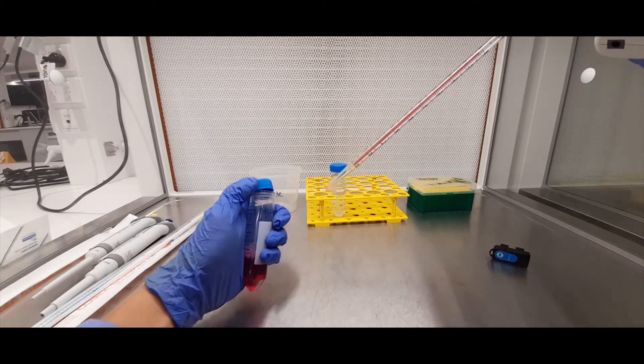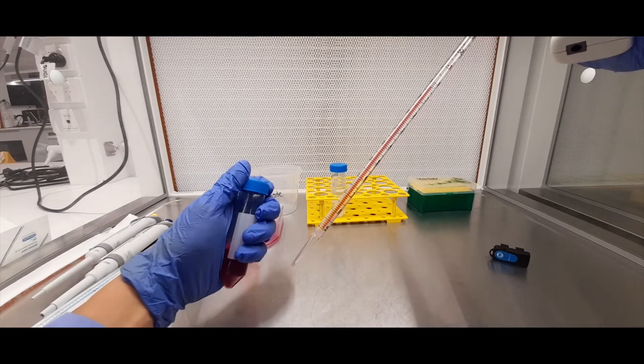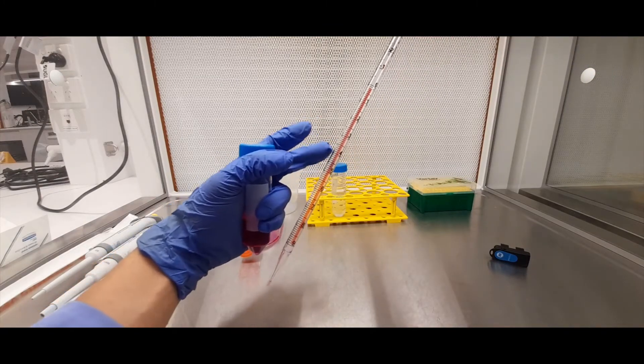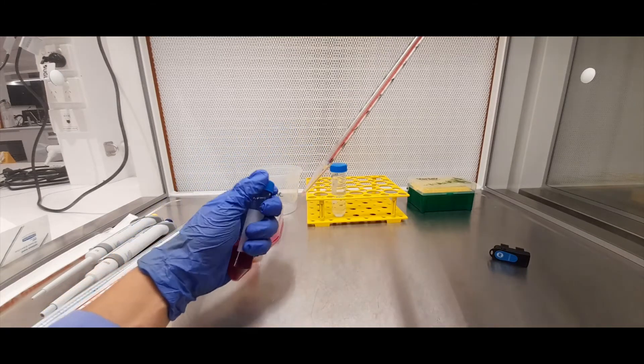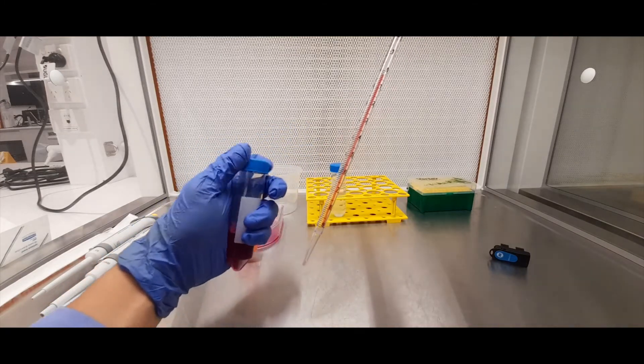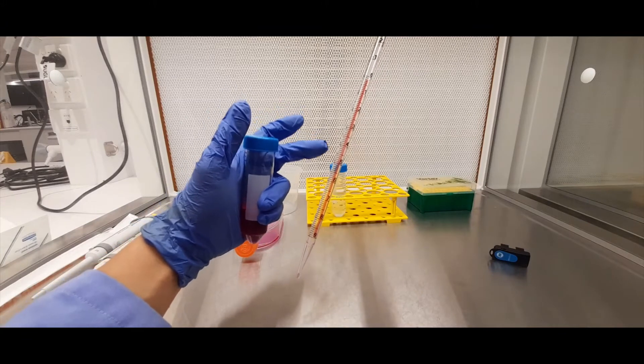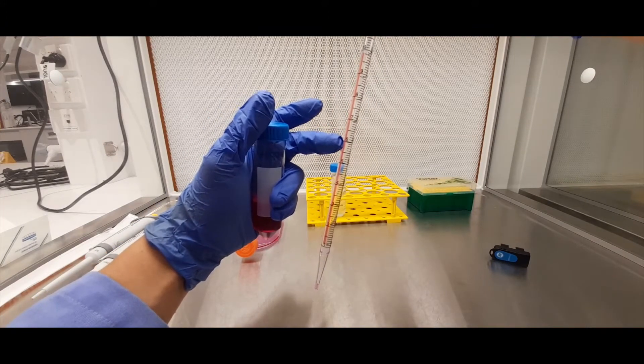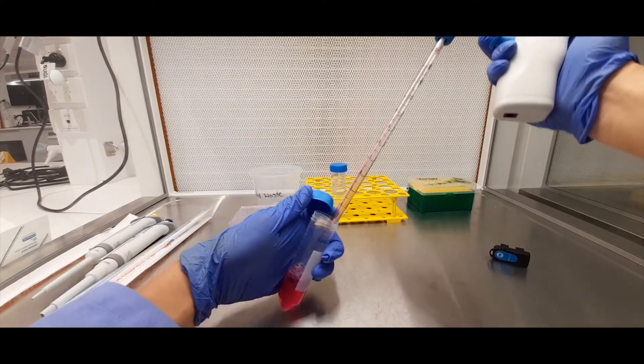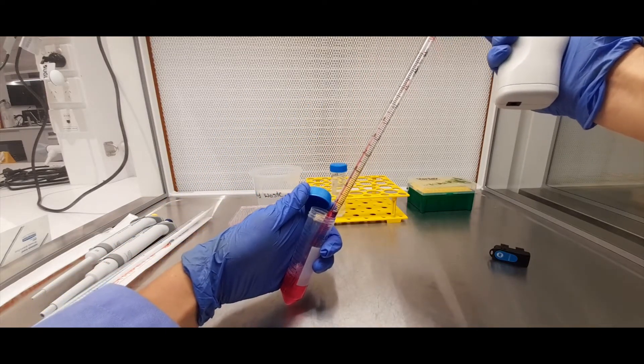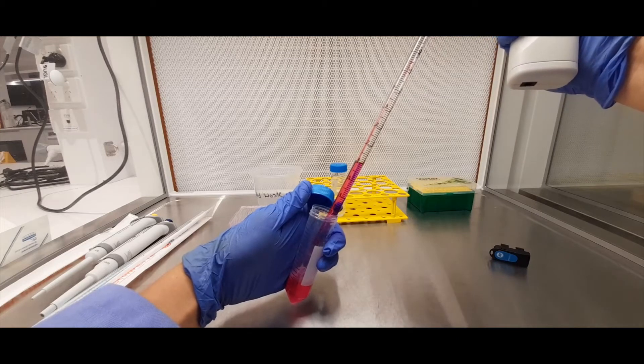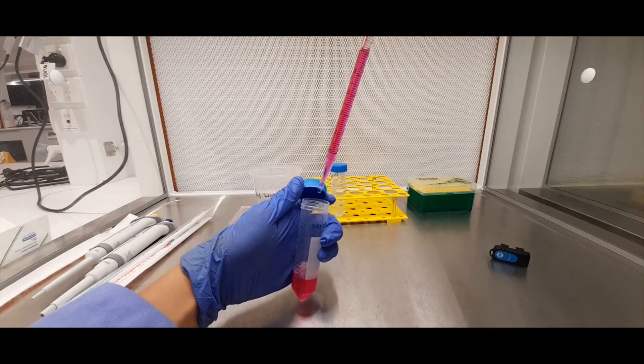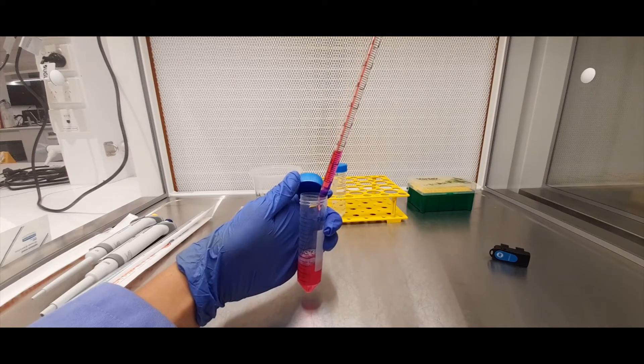You can see on these serological pipettes there's marks here to indicate what volume you're taking up and dispensing. So if we wanted to take up six mils it's at this mark here. So if you wanted to draw up six mils you want to go up to that mark, you can see there. And then you dispense the liquid by pressing down.